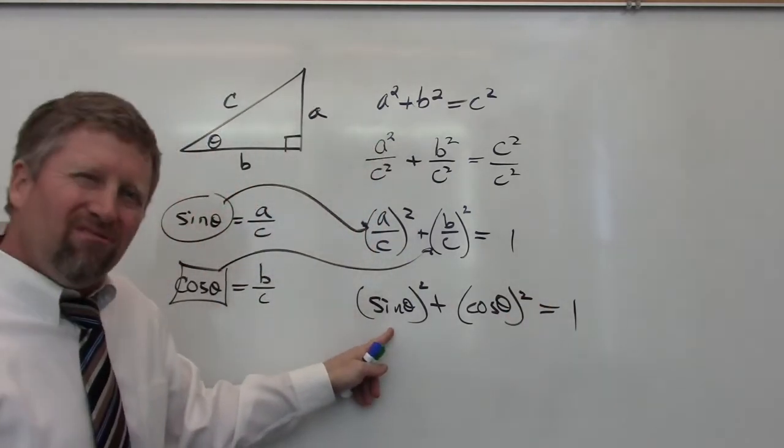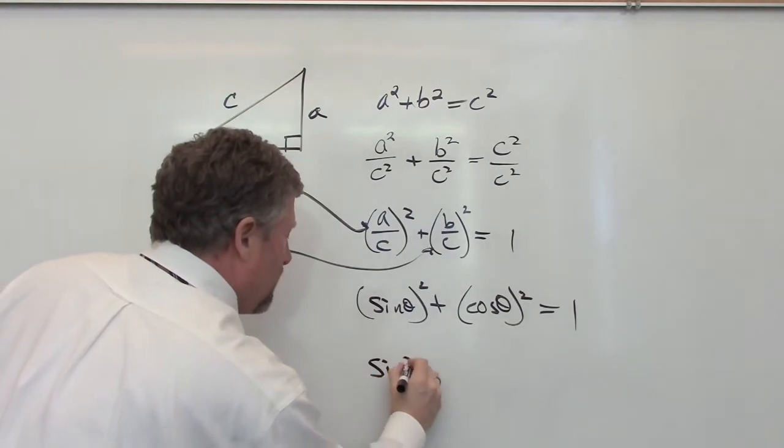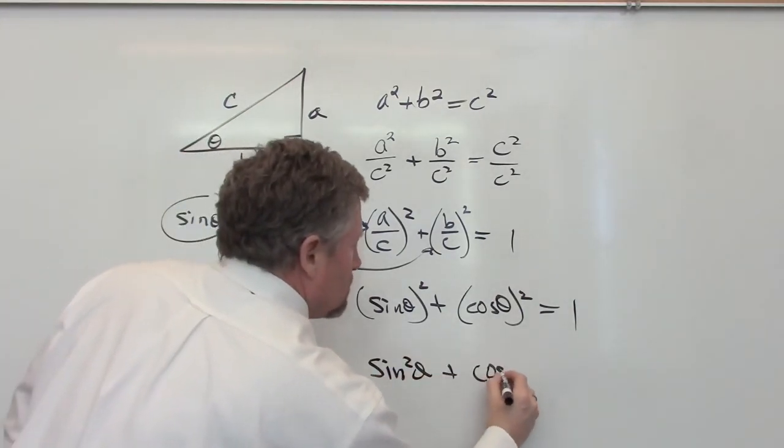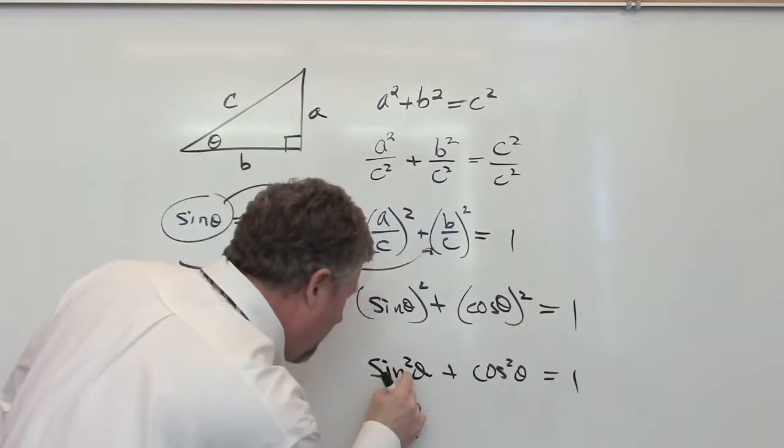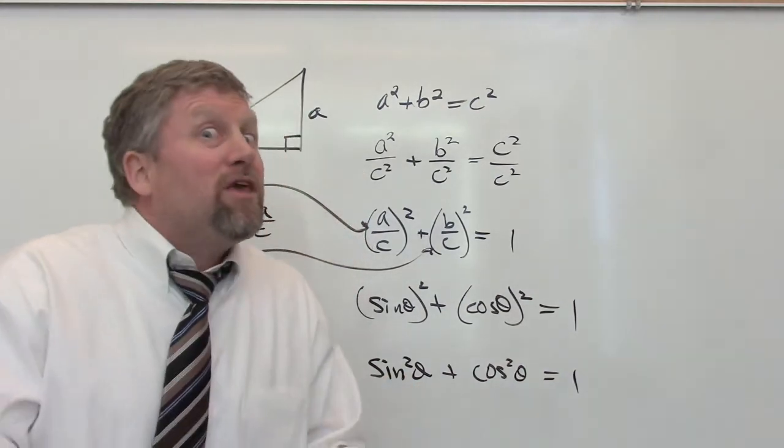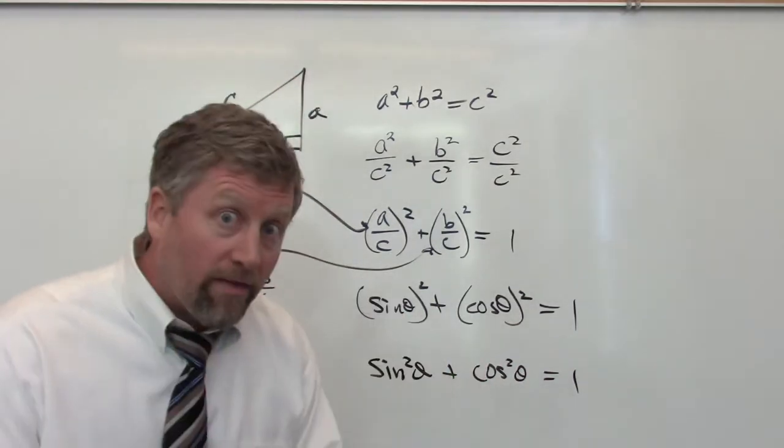Now that's kind of elementary writing. Advanced trig students write this as sine squared theta plus cosine squared theta equals 1. It's kind of important to put the square on the word sine, not the angle, because that's not it. We take the value of sine of theta, which we know is some fraction, and we square that.